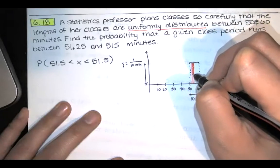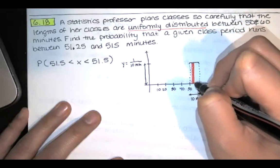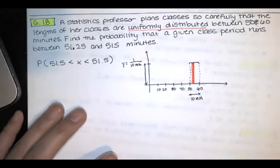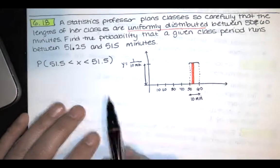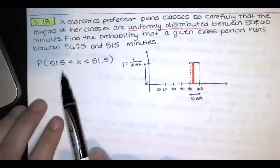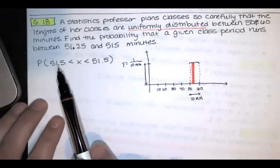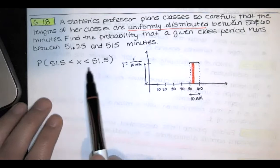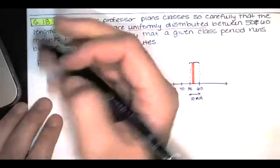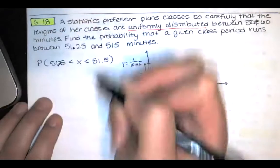And of course, again, this is not to scale. And remember that areas correspond to probabilities here. And so the area of this rectangle is equal to the probability that that class time lasts between 51.25 and 51.5 minutes.